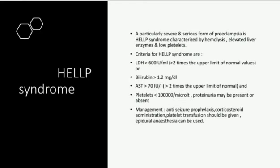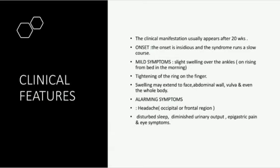Clinical features: manifestations usually appear after the 20th week of pregnancy. It frequently occurs in primigravidas and is more often associated with obstetric and medical complications such as multiple pregnancy, polyhydramnios, pre-existing hypertension, and diabetes. Onset is insidious and the syndrome runs a slow course. Mild symptoms: slight swelling over the ankles that persists on rising from bed in the morning, or tightness of the ring on the finger are the earliest manifestations. Swelling may extend to face, abdominal wall, vulva, and even to the whole body.